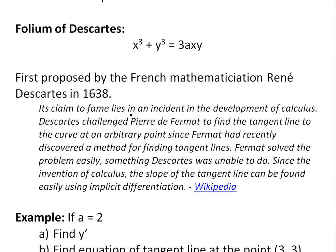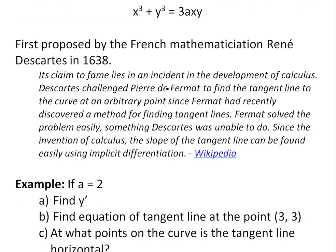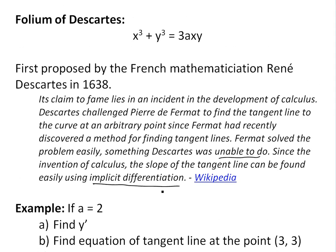Before I get to the example, I just want to show this little excerpt from Wikipedia which I found pretty interesting. Basically, the equation's claim to fame lies in an incident in the development of calculus. Descartes apparently challenged Pierre Fermat to find a tangent line to the curve at an arbitrary point, since Fermat — another famous mathematician — had recently discovered a method for finding tangent lines, in fact using implicit differentiation. So Fermat solved the problem easily, something Descartes was not able to do on this formula. And since the invention of calculus, the slope of the tangent line can be found easily using implicit differentiation.